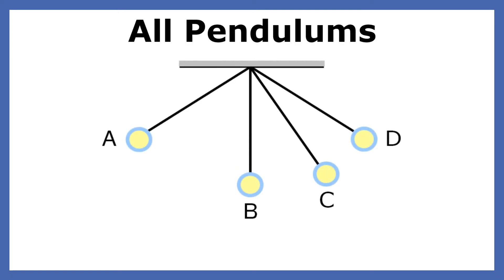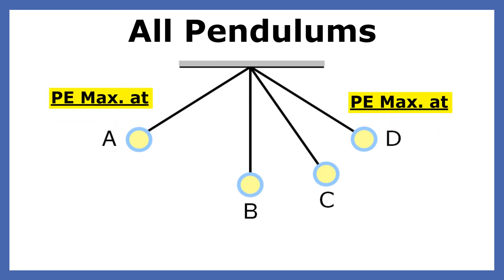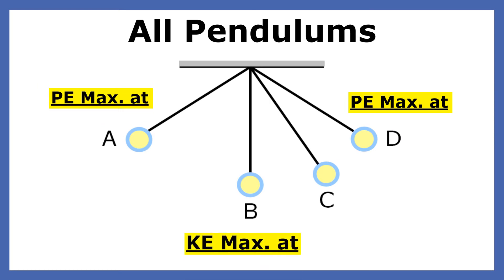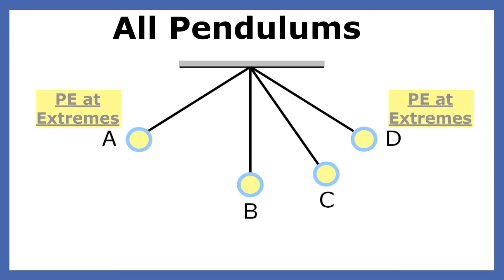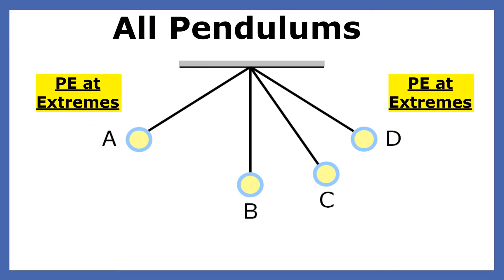For all pendulums, the potential energy is maximum at the extremes — in this case A and D — and the kinetic energy is maximum at the bottom, letter B. The potential energy of a pendulum at the extremes equals the kinetic energy of the pendulum at the bottom.